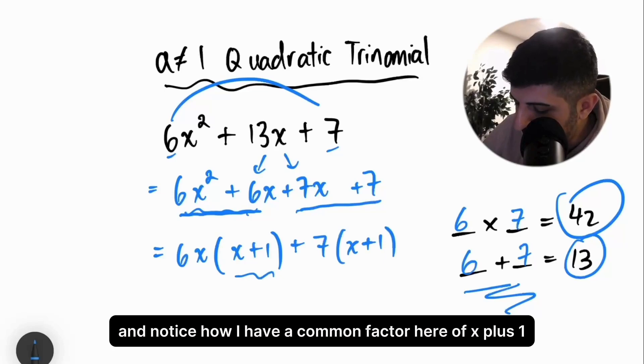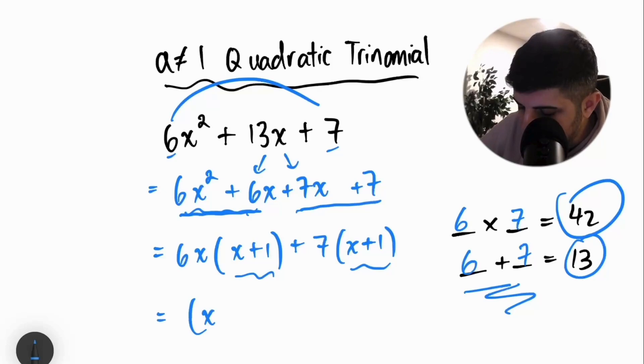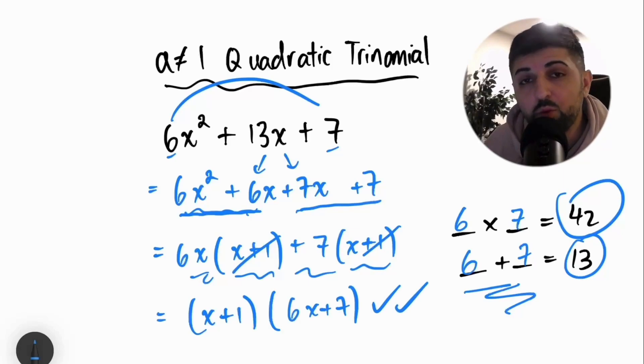Notice how I have a common factor here of x plus 1. Let's pull out that common factor of x plus 1 and read what's left. What's left if I take it out? I get 6x plus 7. And so, that is my fully factored form for a not equal 1.